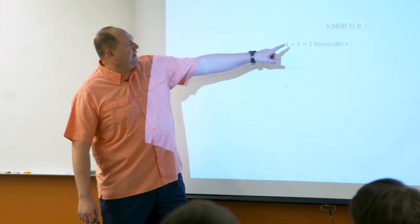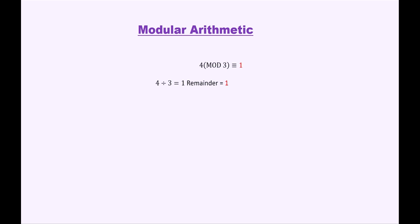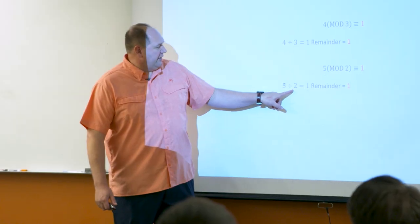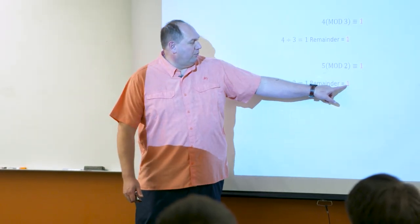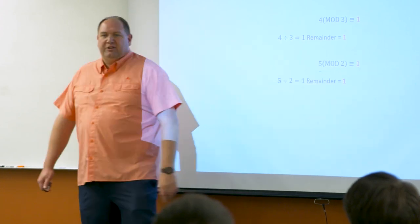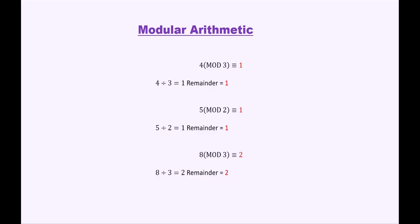So 4 mod 3 is congruent to 1. That's because if I take 4 divided by 3, that equals 1 with a remainder of 1 — 1 times 3 makes 3, plus this 1 makes 4. Let's try this one: 5 mod 2 is congruent to 1, because 5 divided by 2 equals 1 with a remainder of 1, and that remainder is what mod gives you. Here's another example: 8 mod 3 is congruent to 2, because 2 times 3 makes 6, two more makes 7 and 8, so the remainder is 2.